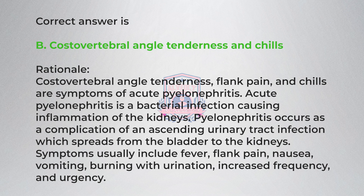Rationale: Costovertebral angle tenderness, flank pain, and chills are symptoms of acute pyelonephritis. Acute pyelonephritis is a bacterial infection causing inflammation of the kidneys. It occurs as a complication of an ascending urinary tract infection spreading from the bladder to the kidneys. Symptoms usually include fever, flank pain, nausea, vomiting, burning with urination, increased frequency, and urgency.